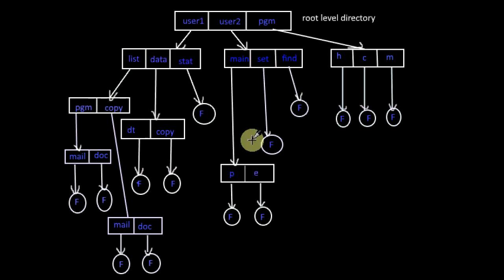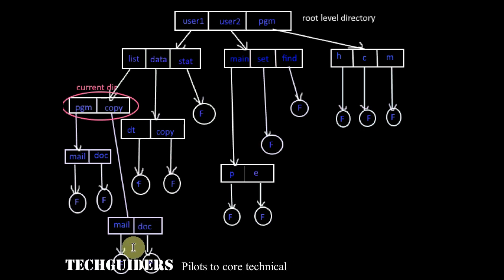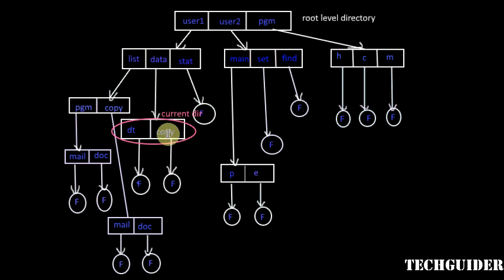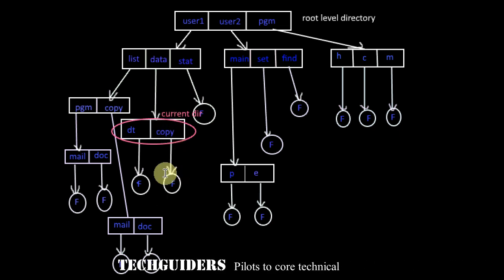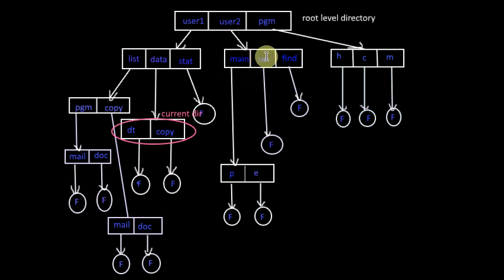In addition, the change directory method can also be used to make access easier. If a file to be accessed is not inside the current directory, the user can change his directory to the directory holding that file. A change directory system call will be available to redefine the current directory. From there, the file can be accessed by specifying the file name or by using the path name. Similarly, if one user wishes to access a file inside another user's directory, he can use the same method.